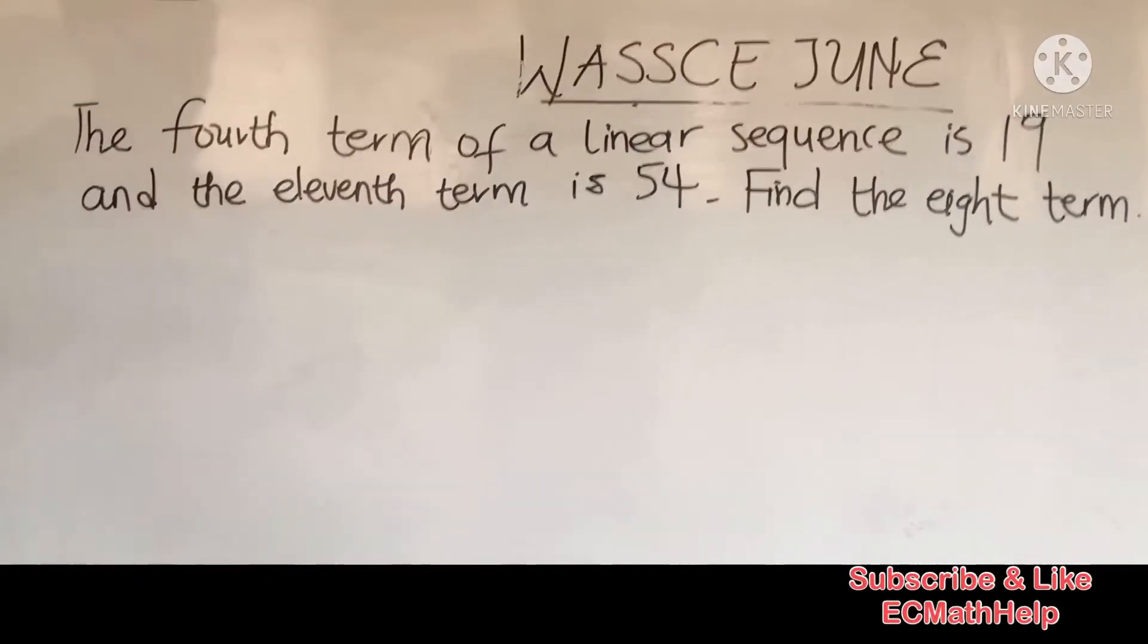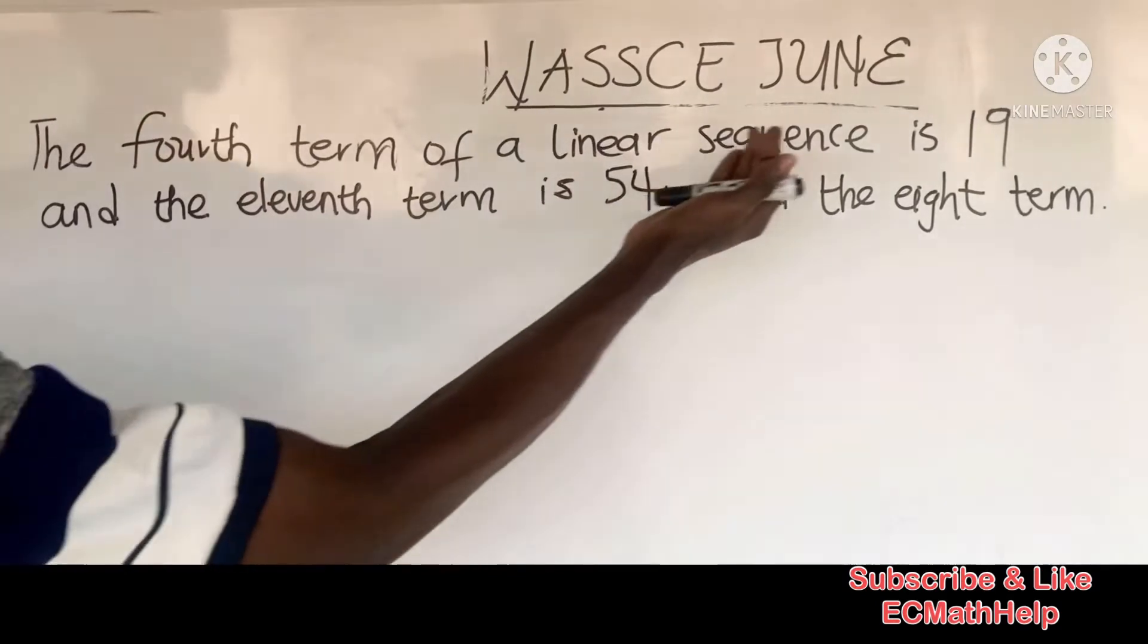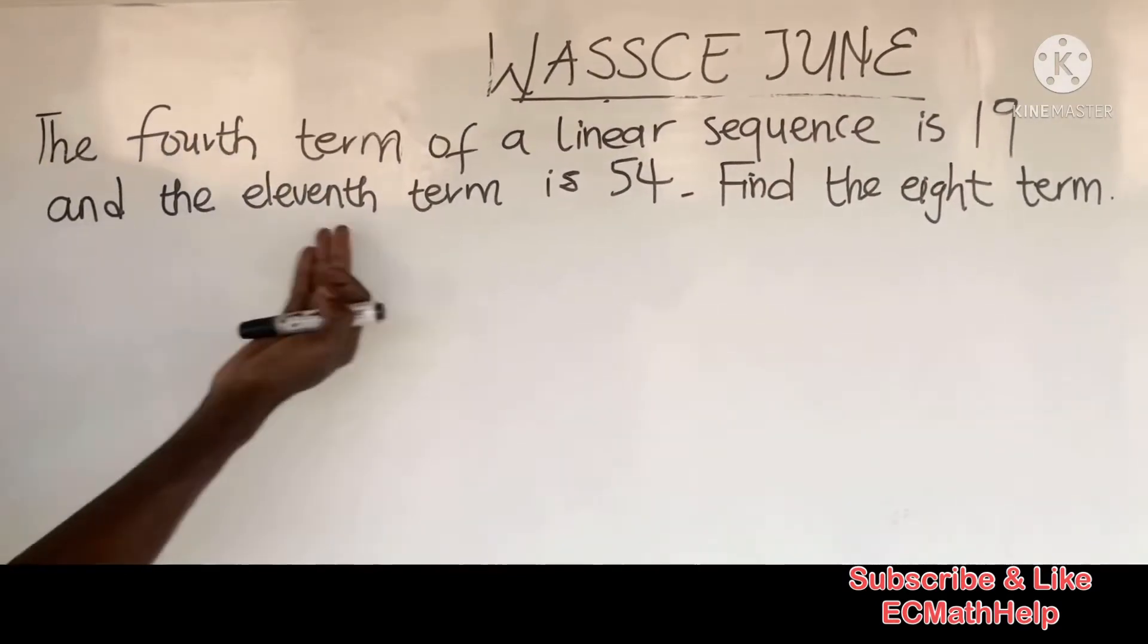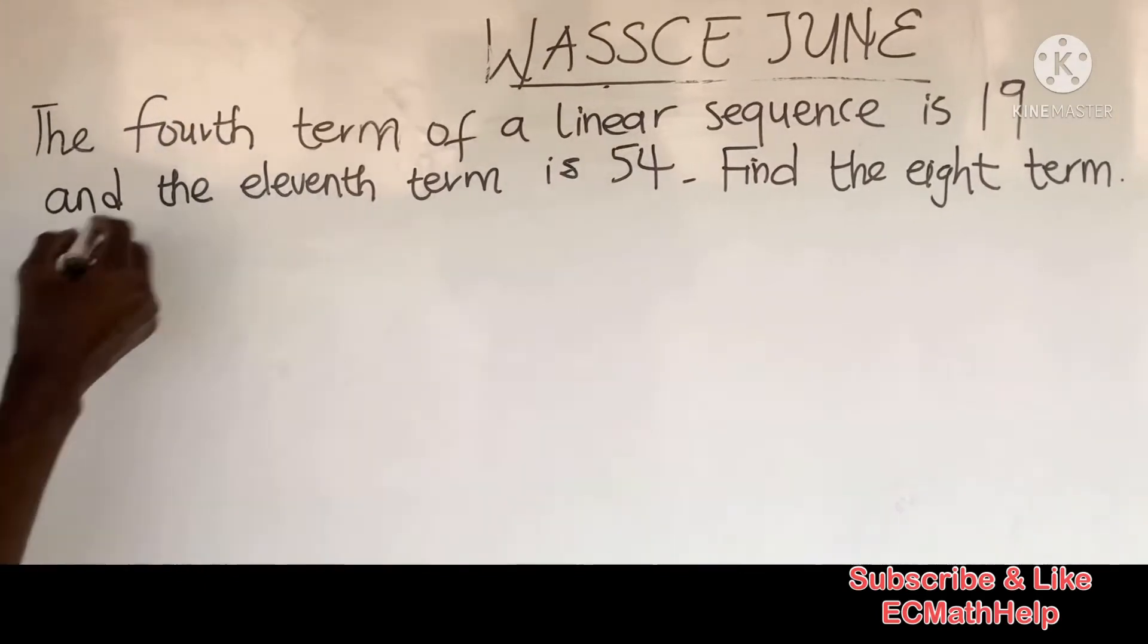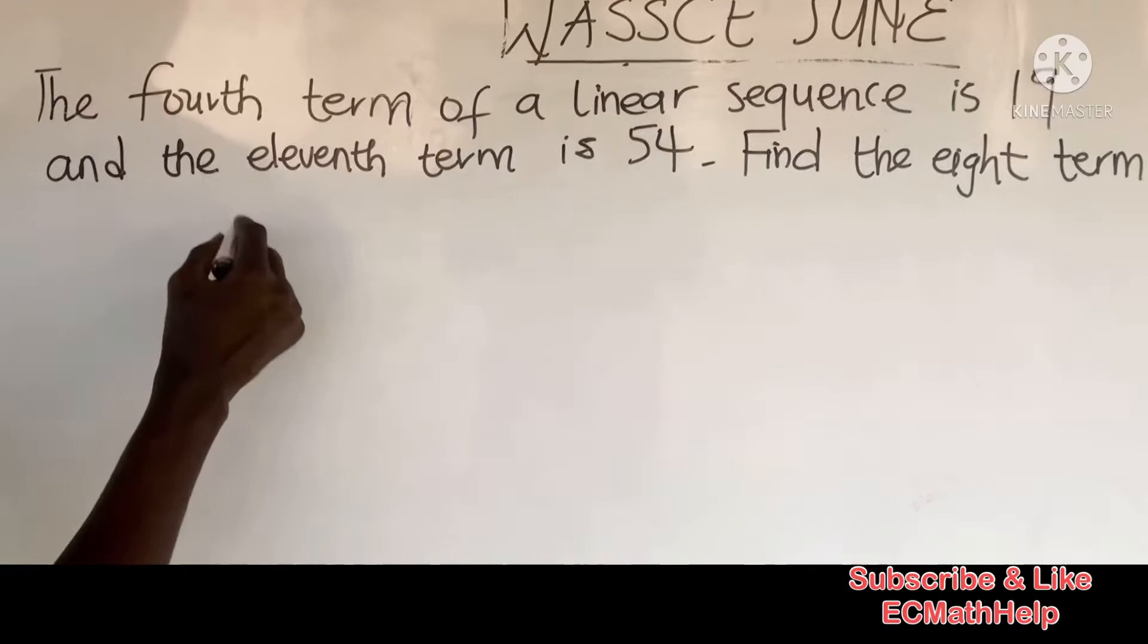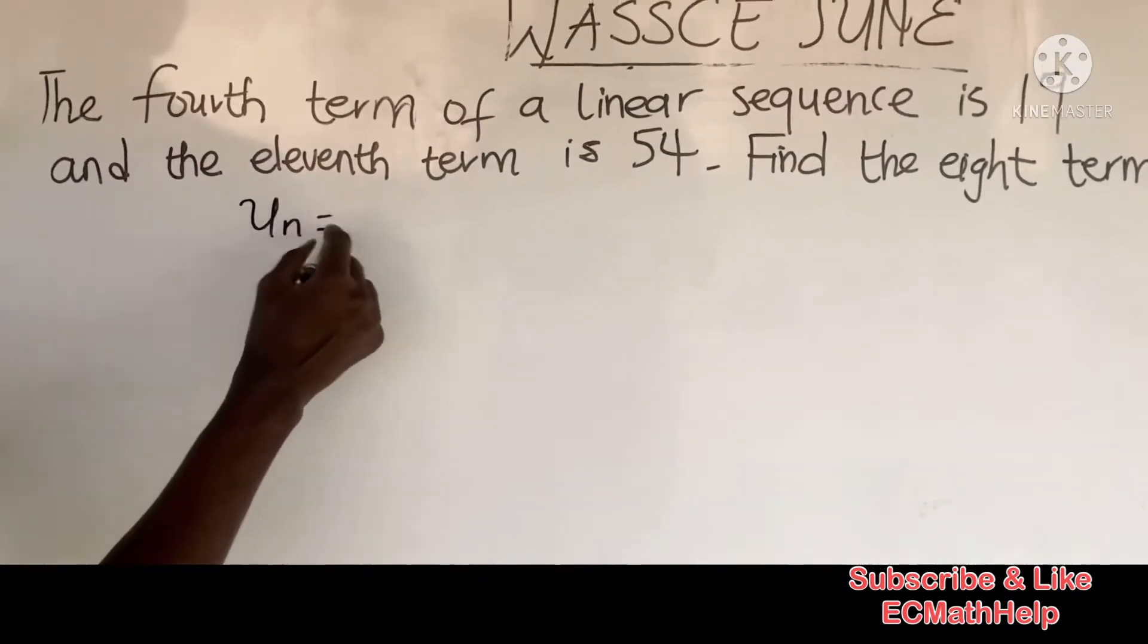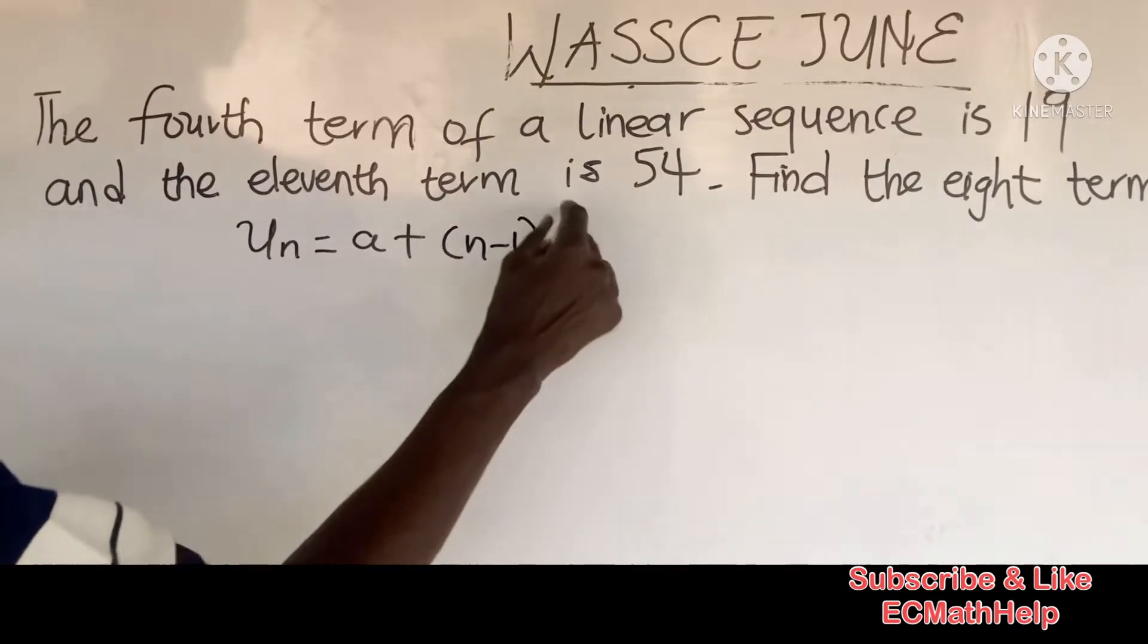In this question, the fourth term of a linear sequence is 19 and the eleventh term is 54. Find the eighth term. The general formula for a sequence is that the nth term equals the first term plus (n-1) times d.